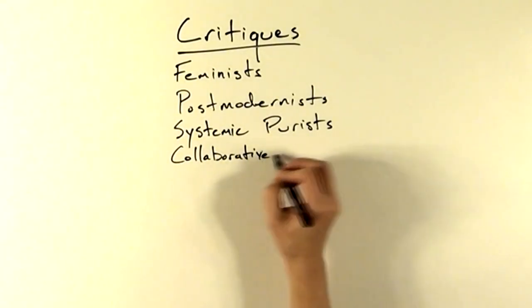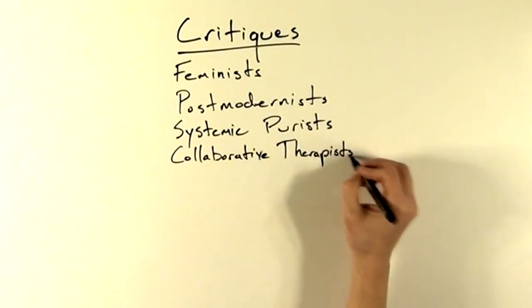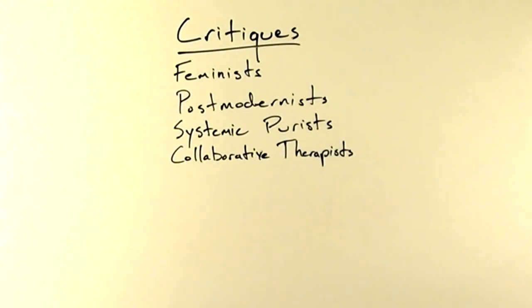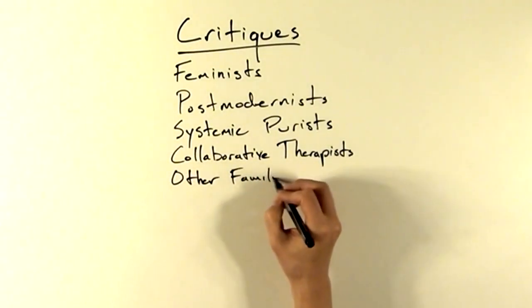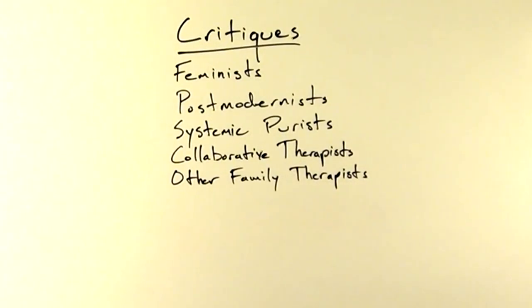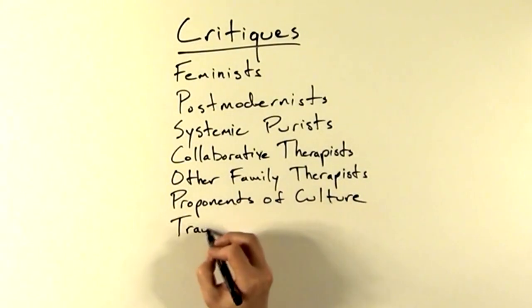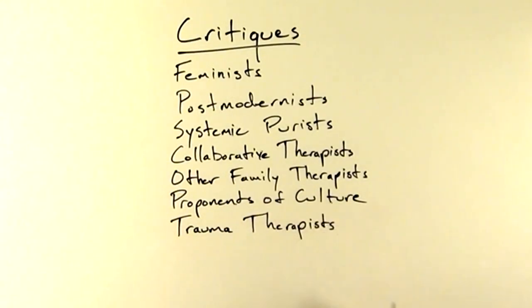Collaborative therapists criticize Bowenian therapy for imposing goals upon the client, such as detriangulation, rather than working collaboratively with the client. Other kinds of family therapists criticize Bowenian therapy for not including the entire family in treatment. Proponents of cultural competency might criticize Bowenian therapy for not sufficiently emphasizing cultural awareness and sensitivity. Trauma therapists might criticize Bowenian therapy for not incorporating our contemporary understanding of trauma recovery. Others criticize the theory for providing a reductive and simplistic explanation for too many presenting problems.